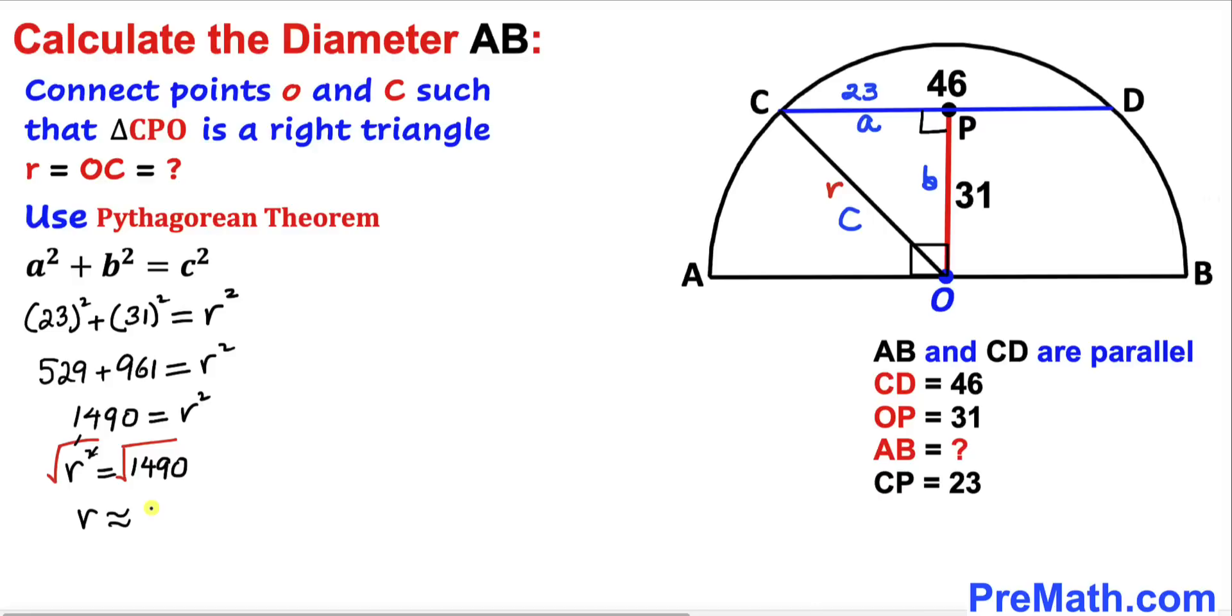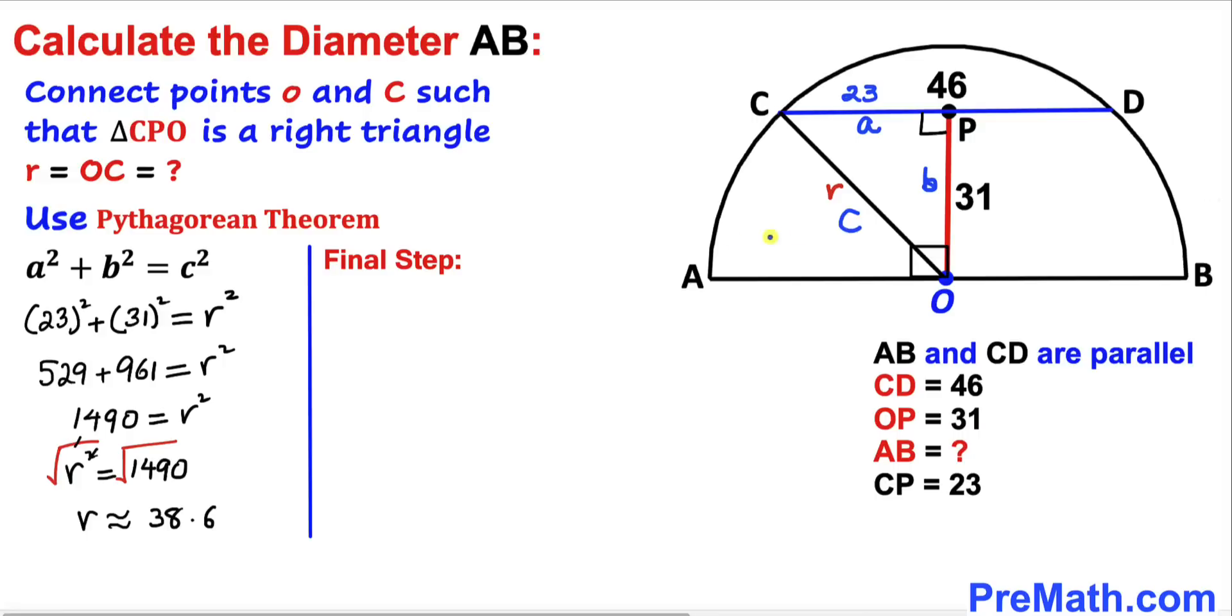Here's our final step. Since we're looking for the value of diameter AB, and we know that diameter AB equals 2 times 38.6, which is approximately equal to 77.2 units.